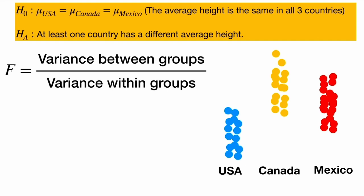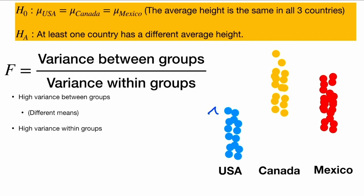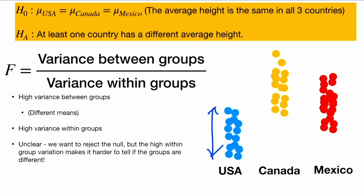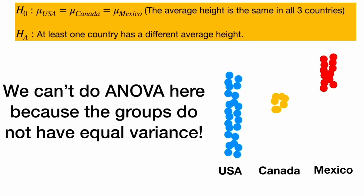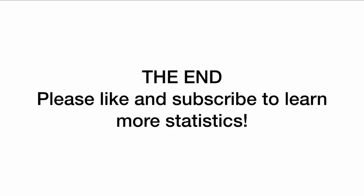Now here is the tricky case. We do have high variance between the groups — they have different means — but we also have high variance within the groups, so each group has quite a bit of variability and it's harder to tell the difference. It's unclear whether to reject the null; the high within-group variation makes it harder to tell if the groups are different. That's why we actually want to calculate an F-statistic to see how it compares to the critical value, and know if our results are statistically significant or perhaps just due to random variation. If the within-group variability differs greatly between groups, that violates the assumptions of ANOVA and we cannot proceed.